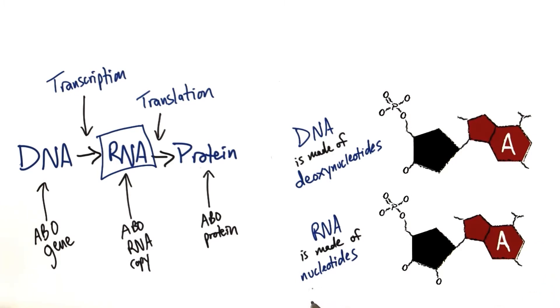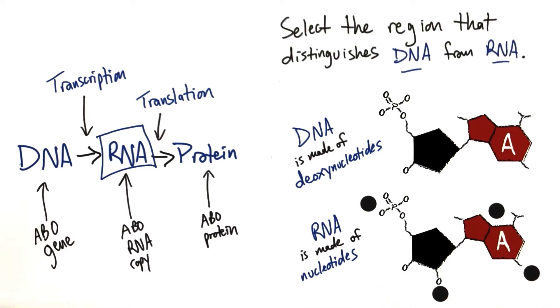RNA is made of nucleotides instead of deoxynucleotides. And what I want you to try to do, select the region that distinguishes DNA from RNA. Focus down here on the RNA nucleotide, and there are four regions to choose from. I want you to pick the one that you think distinguishes it from the DNA deoxynucleotide.